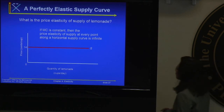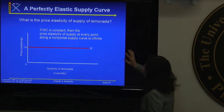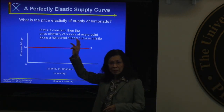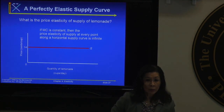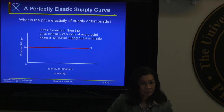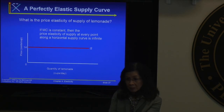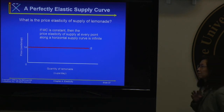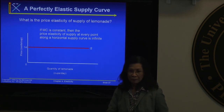Perfectly elastic supply is a horizontal line — elasticity goes to infinity. An example is lemonade: the inputs are sugar, lemons, water, and ice, which are easy to acquire and very flexible. Resources are quite mobile — a three-year-old could make lemonade. The inputs are easily substitutable and available, so the supply is very elastic — perfectly elastic.